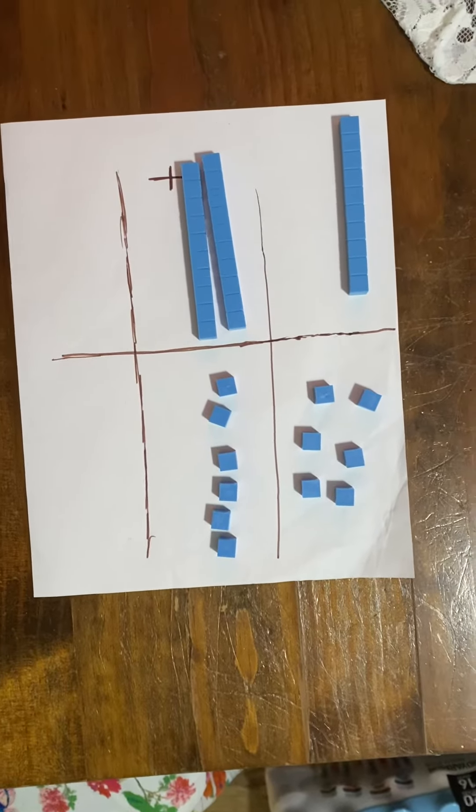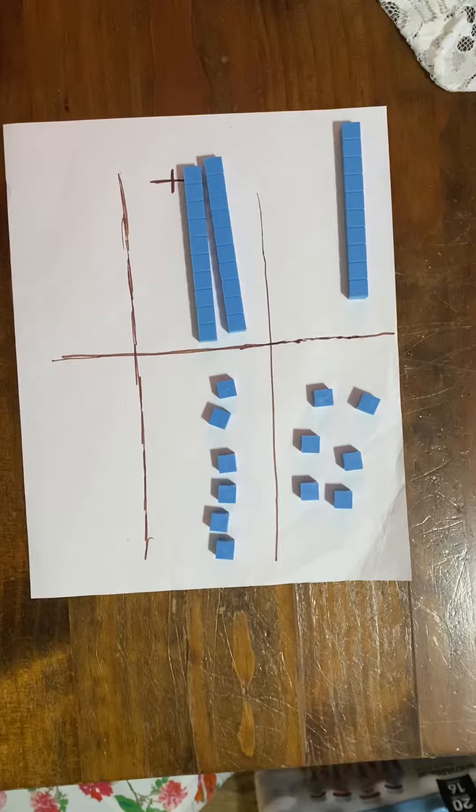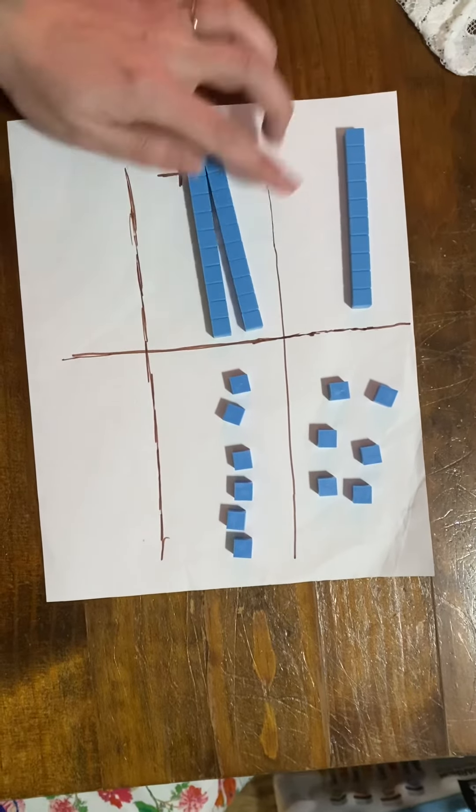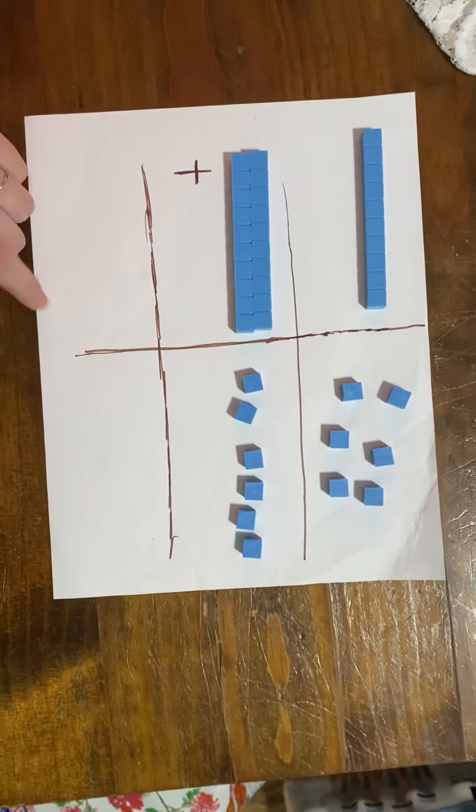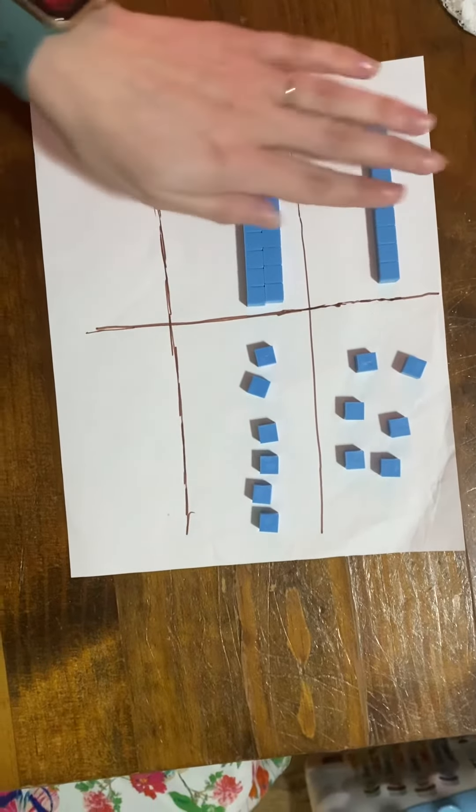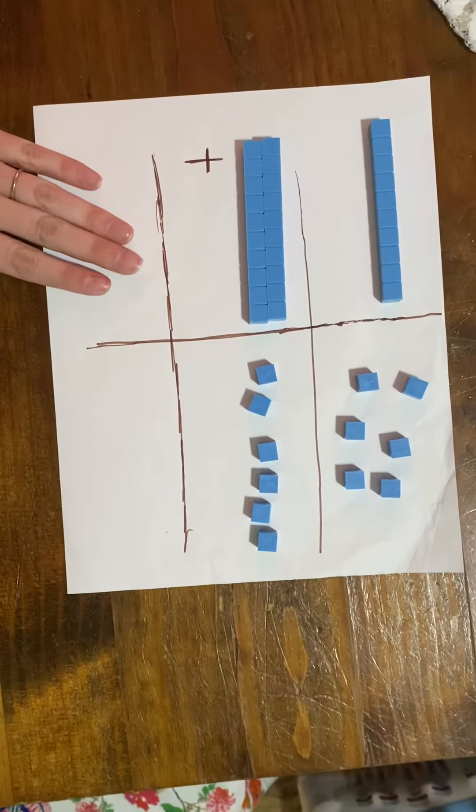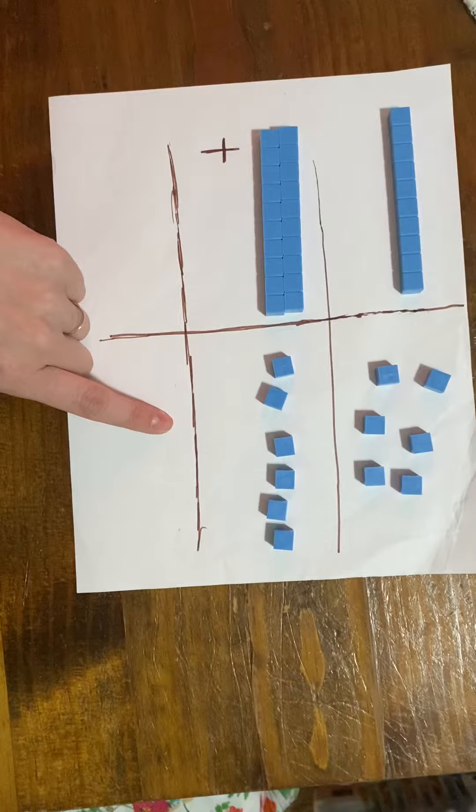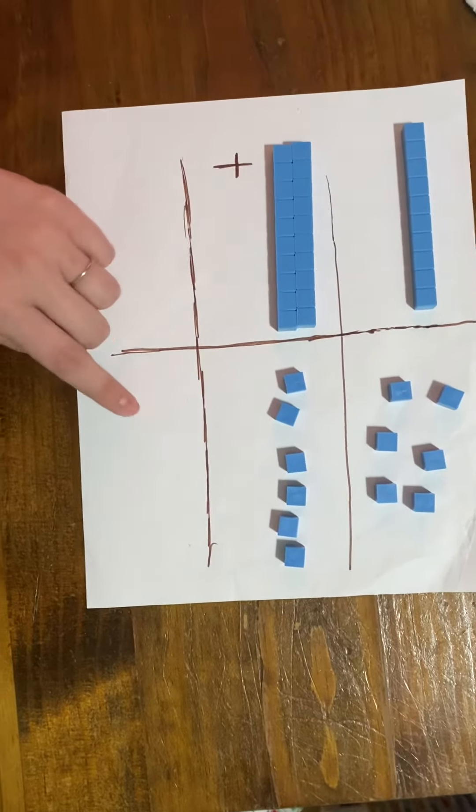Okay, so today we're going to talk about why regrouping works. Here we have—and I put some extra lines on my paper—a group of 10, which goes in the tens place. All of our groups of 10 are going to go in the tens place, and then we have some ones over here in the ones place.